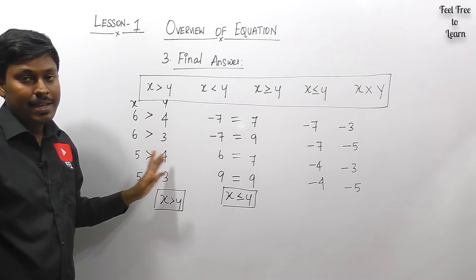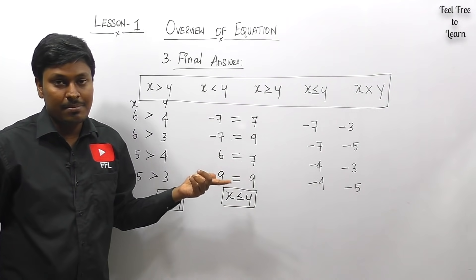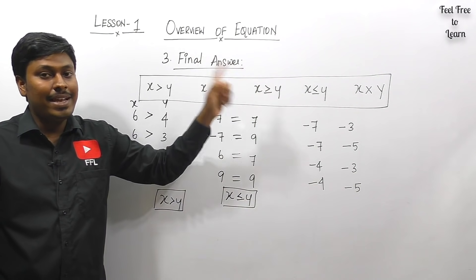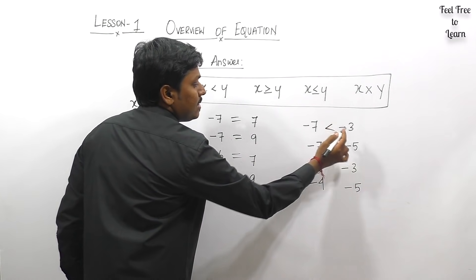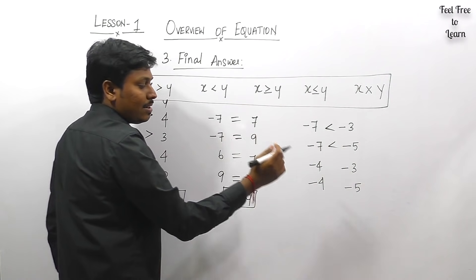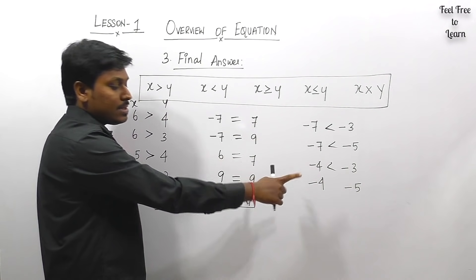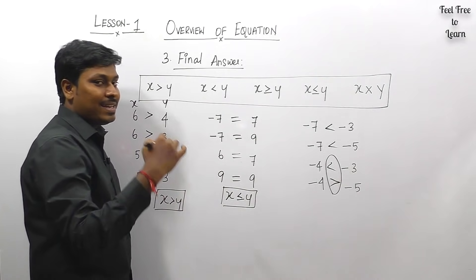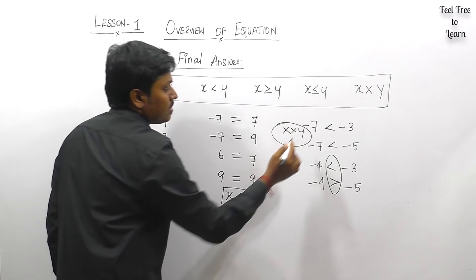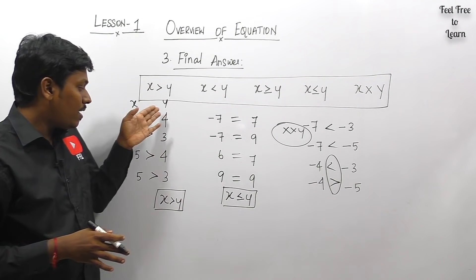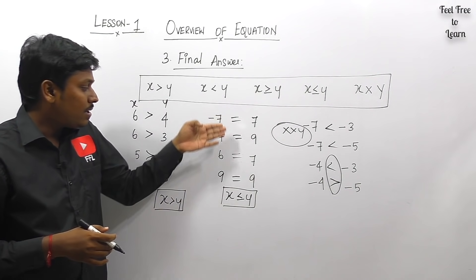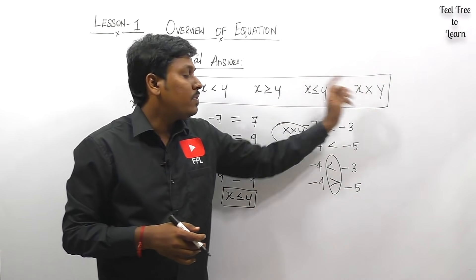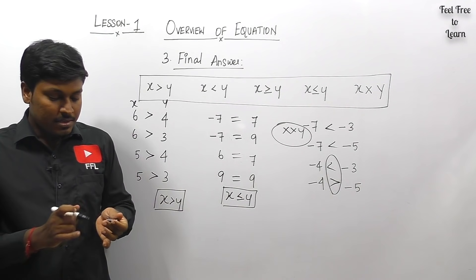The final concept is: if while comparing you find one greater-than result and one less-than result, you must say the relationship between x and y cannot be established. For example: −3 vs 7 gives y > x; −3 vs 9 gives y > x; −4 vs −3 gives x > y; but −4 vs −5 gives x > y. Since you have both less-than and greater-than results, the relationship between x and y cannot be determined.